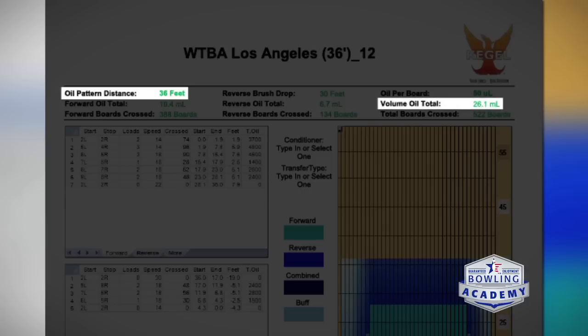I want to know the total volume. Kegel's done a very good job of standardizing how much oil is on the lane these days. There's almost always between 20 and 30 units. So anytime you see a league shot, you're around the 24, 25 unit range. It's right in the middle. That gives you a baseline of what you're going to see.